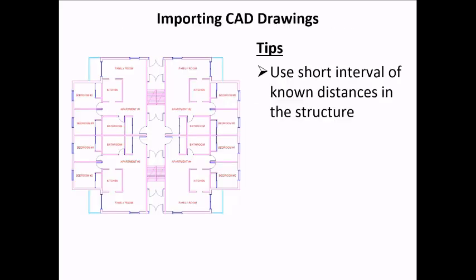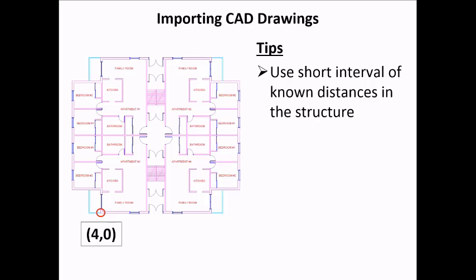When importing CAD drawings, my main recommendation is to use short intervals of known distances within a structure. You do not need to use the extents of the structure to scale it. Instead, if you know a shorter distance or have included grid lines in your CAD drawing, I would recommend using a smaller distance rather than a large distance.